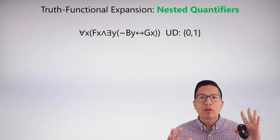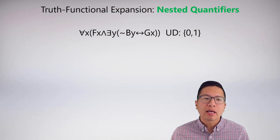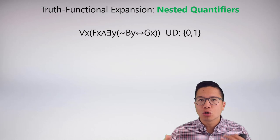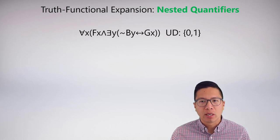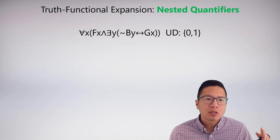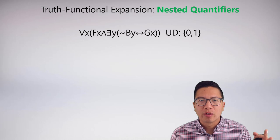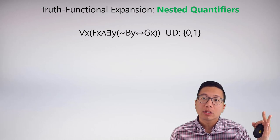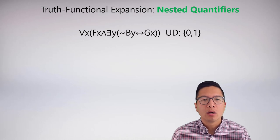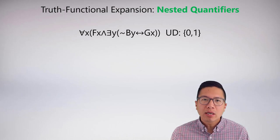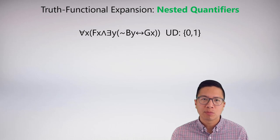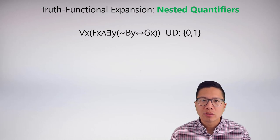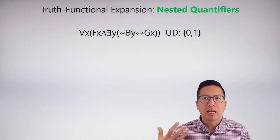Truth functional expansion is straightforward when there's only a single quantifier. It gets more complicated in two cases: when we have nested quantifiers, and when the quantifier doesn't range over the entire scope of the sentence. When expanding nested quantifiers—where one quantifier quantifies over another—you can actually expand in any order, inside out or outside in. I typically go outside in, but there's no right answer. Just do whatever comes naturally.